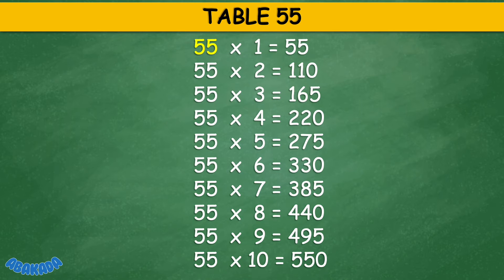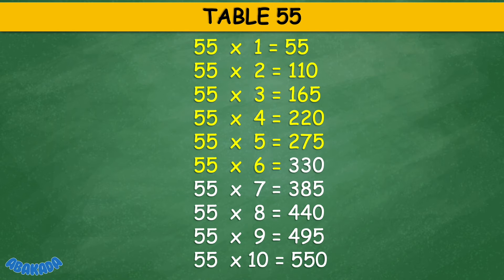Table 55: 55 times 1 equals 55, 55 times 2 equals 110, 55 times 3 equals 165, 55 times 4 equals 220, 55 times 5 equals 275, 55 times 6 equals 330, 55 times 7 equals 385, 55 times 8 equals 440, 55 times 9 equals 495, 55 times 10 equals 550.